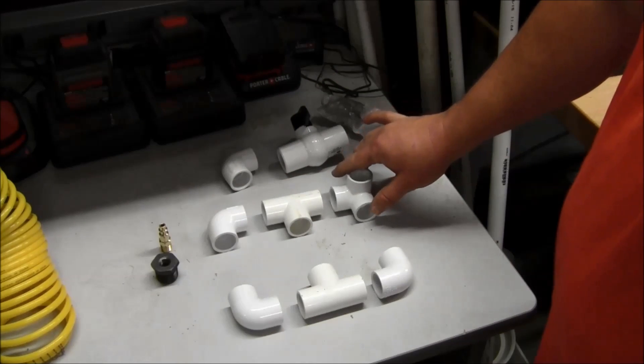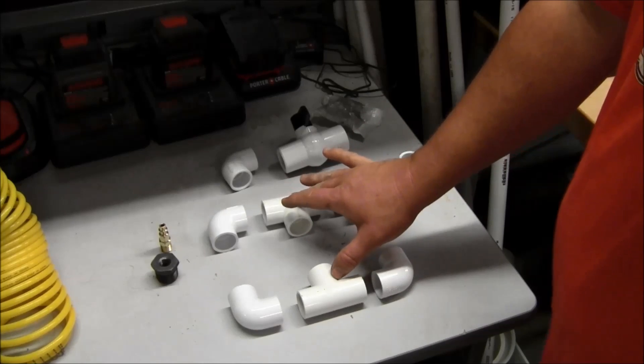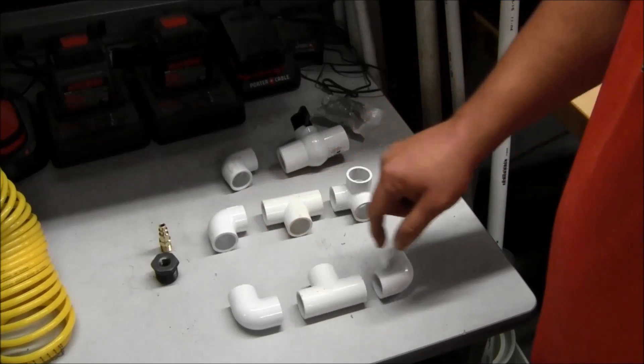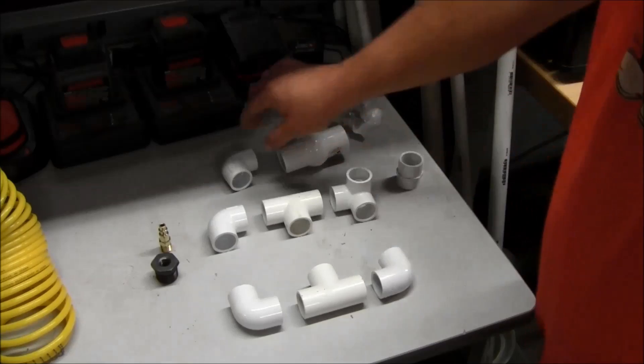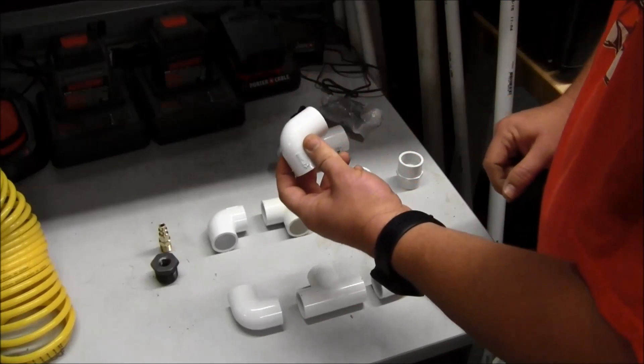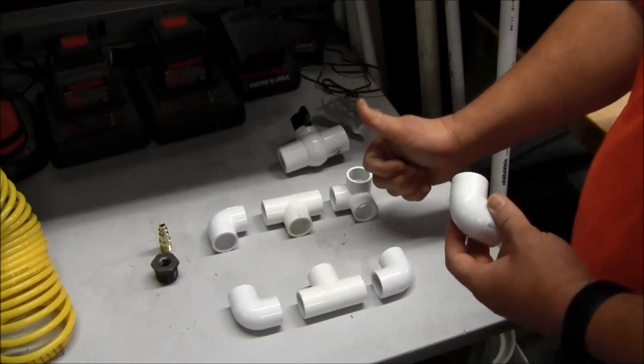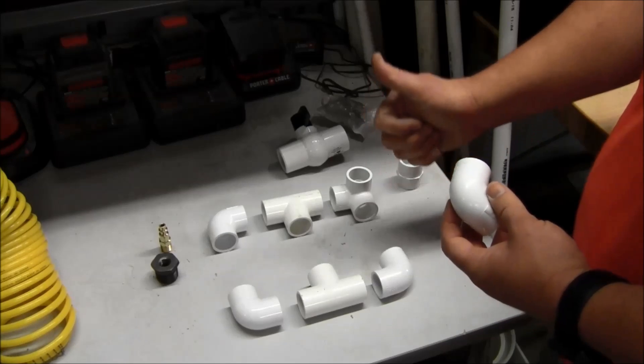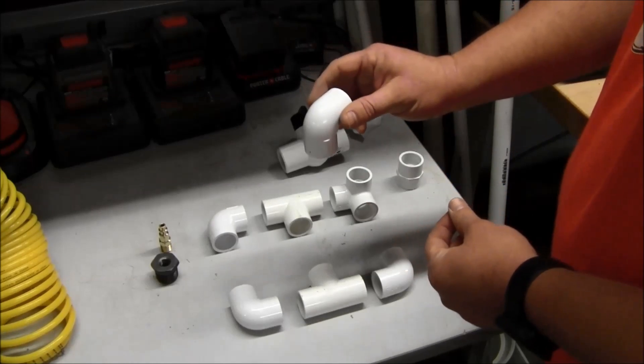Basically what we're going to need is this three way corner piece, two T's for the middle, three corner elbows for the base. We're going to need an elbow to go to the top, this vertical tube that's going to run out of this corner piece. At the top we're going to elbow and go sideways.